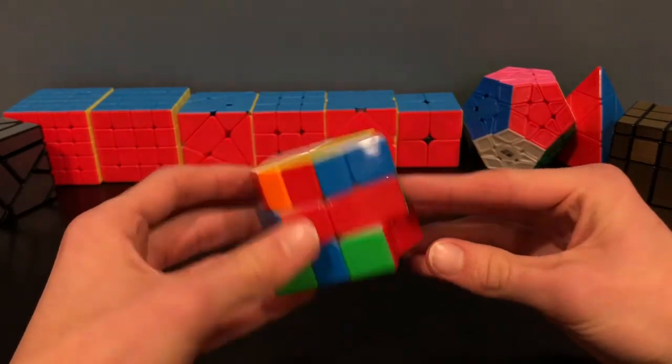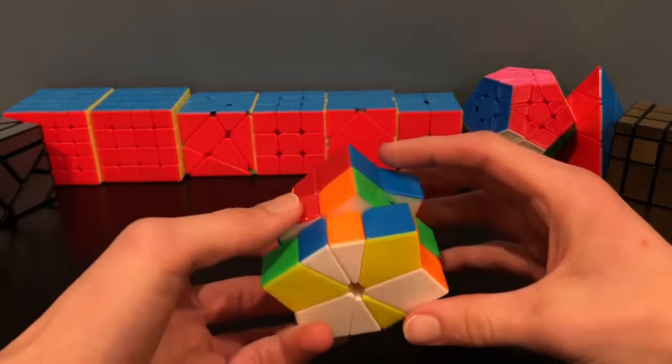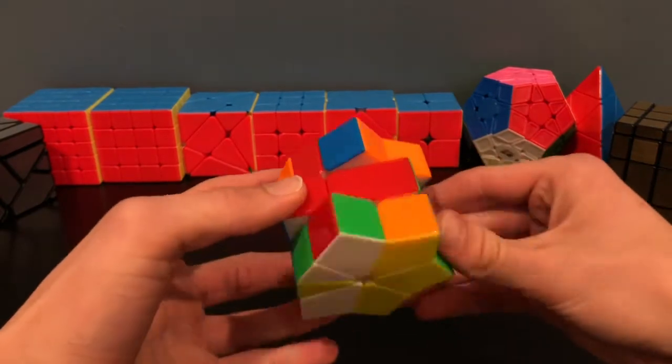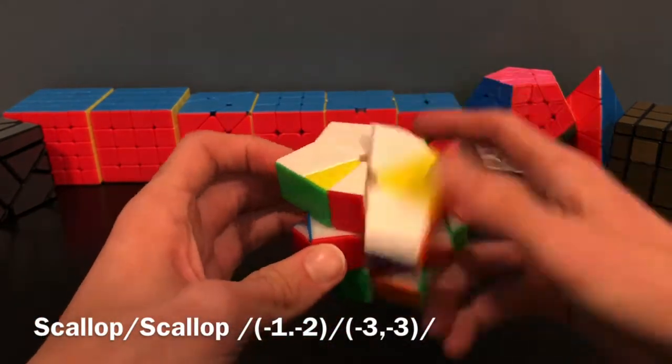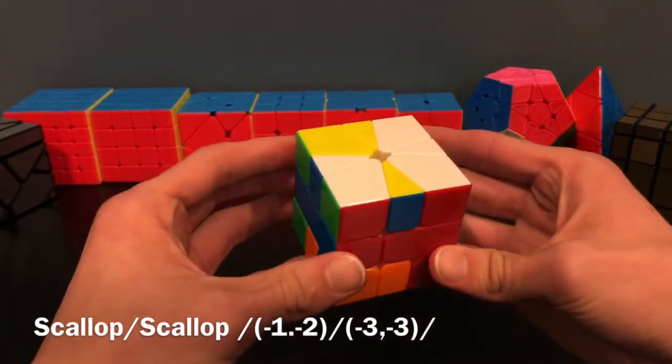Now there is one last case, which is when you have two parallel edges. This will require a little bit more setup, but instead of Scallop Kite, you will then get it into 4-4, and then it's still only three moves to the cube.